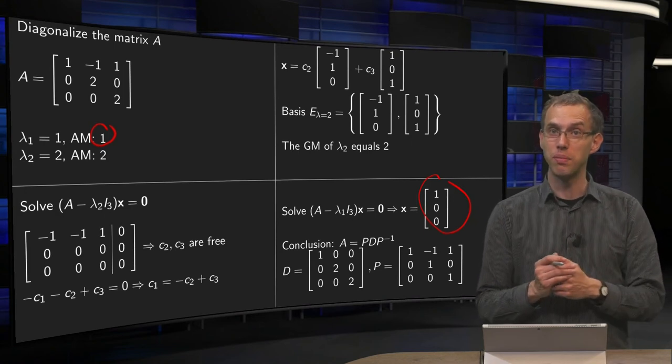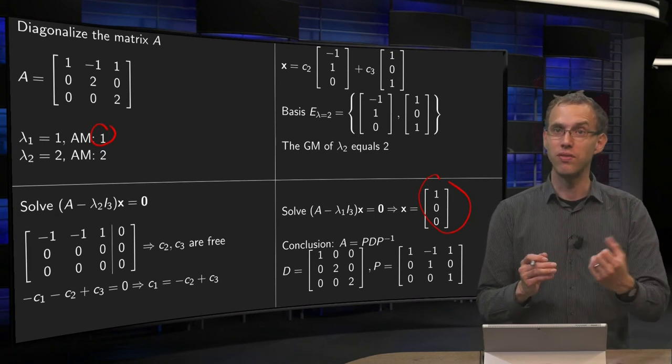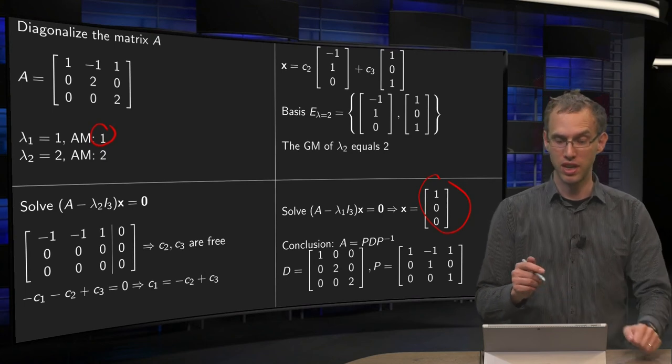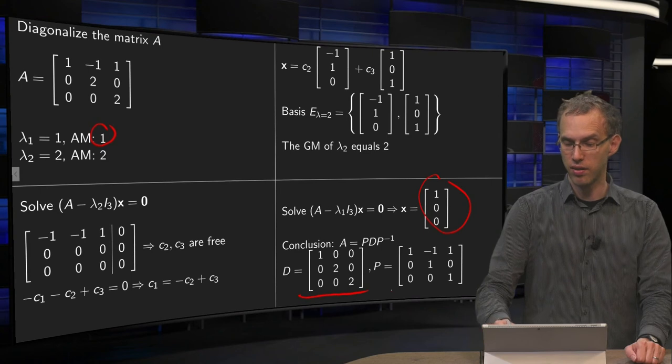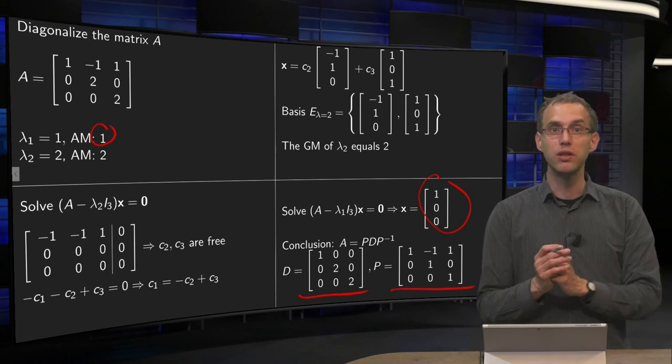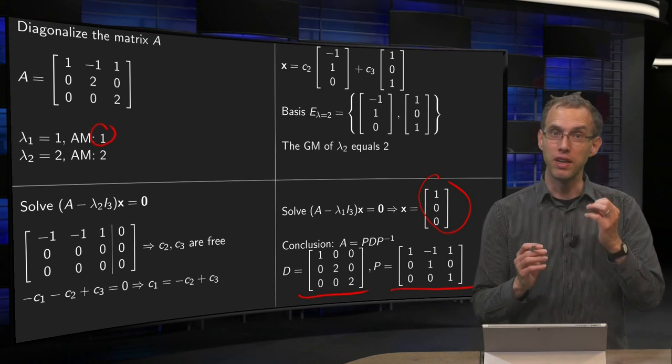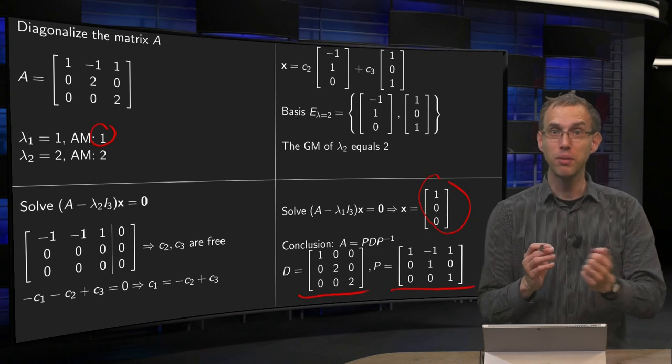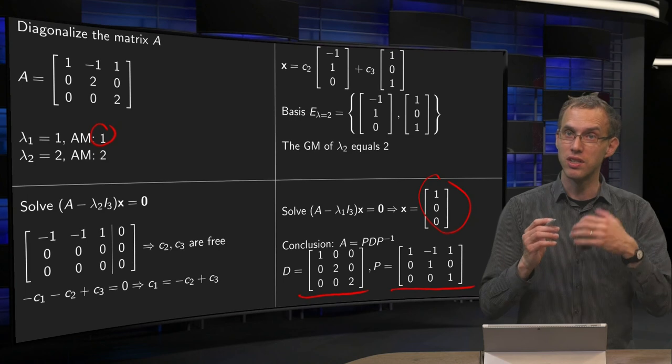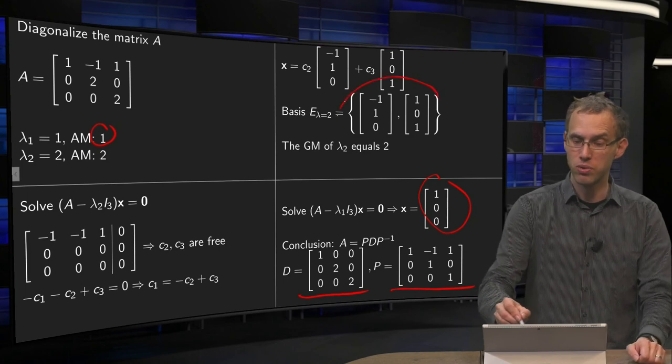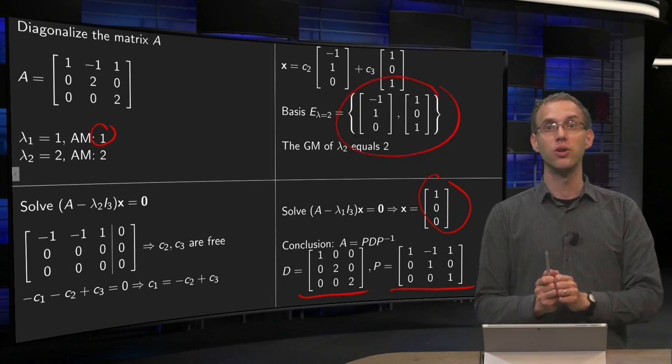Now we see that we have three independent eigenvectors, so that means that we can diagonalize our matrix A, A equals PDP inverse. And we could do this because for lambda equals 2, which had algebraic multiplicity 2, we found two independent eigenvectors, and that's all we needed.